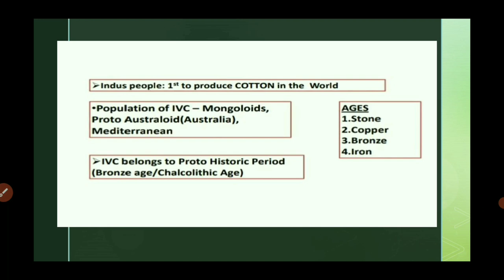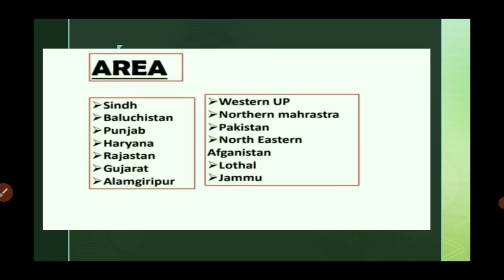The Indus people were the first producers of cotton in the world. The population of the Indus Valley included Mongoloids, Proto-Australoids, and Mediterraneans. In terms of ages — Stone, Copper, Bronze, and Iron — the Indus Valley Civilization belongs to the proto-historic period, specifically the Bronze Age.